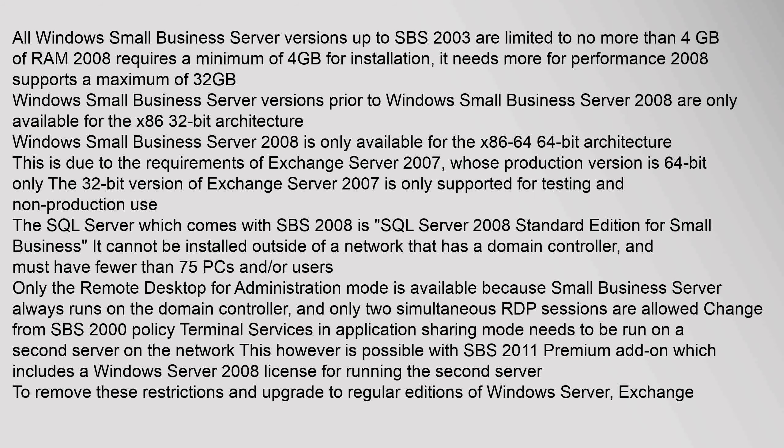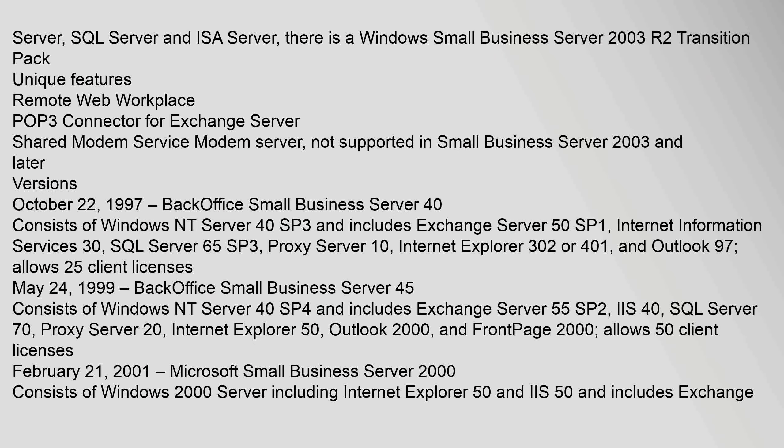Only the Remote Desktop for Administration mode is available because Small Business Server always runs on the domain controller, and only two simultaneous RDP sessions are allowed — a change from SBS 2000 policy. Terminal Services in application sharing mode needs to be run on a second server on the network. This is possible with SBS 2011 Premium Add-on, which includes a Windows Server 2008 license for running the second server. To remove these restrictions and upgrade to regular editions of Windows Server, Exchange Server, SQL Server, and ISA Server, there is a Windows Small Business Server 2003 R2 Transition Pack.